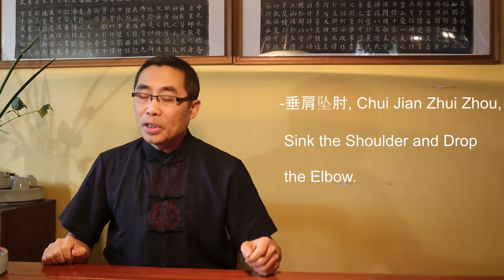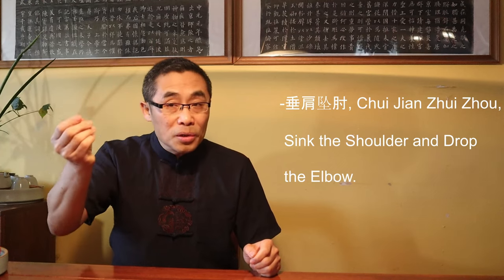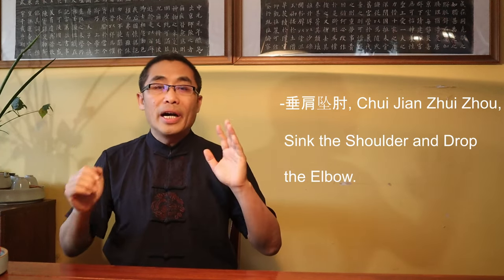Now, let's check out Cheng style's Shuang Huan Zhang, the double striking palm. You can find out the same principle is applied here as well. At this point, you may be wondering if I have even heard about a proverb in Chinese internal martial art dealing with the shoulder and elbow called Cui Jian Zhui Zhou, Sink the Shoulder and Drop the Elbow.